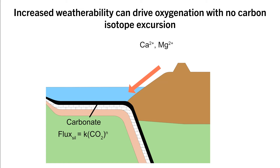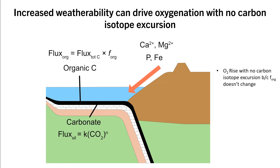The production of organic carbon is also controlled by nutrients such as phosphorus, which are derived from continental weathering. So enhanced continental weathering can increase production of both carbonate and organic carbon. And if they increase proportionally, then there is no change in F-ORG to accompany the increased burial of organic carbon and rise in atmospheric oxygen.